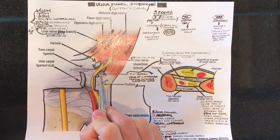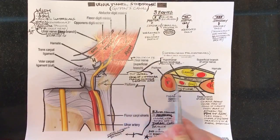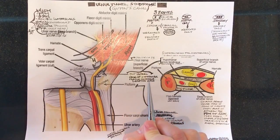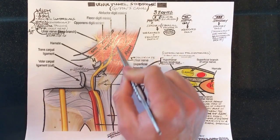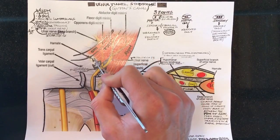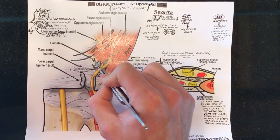The roof which is cut right here is actually the common tendinous origin of the hypothenar musculature. All the hypothenar muscles originate from this arch that spans between the hamate and the pisiform.